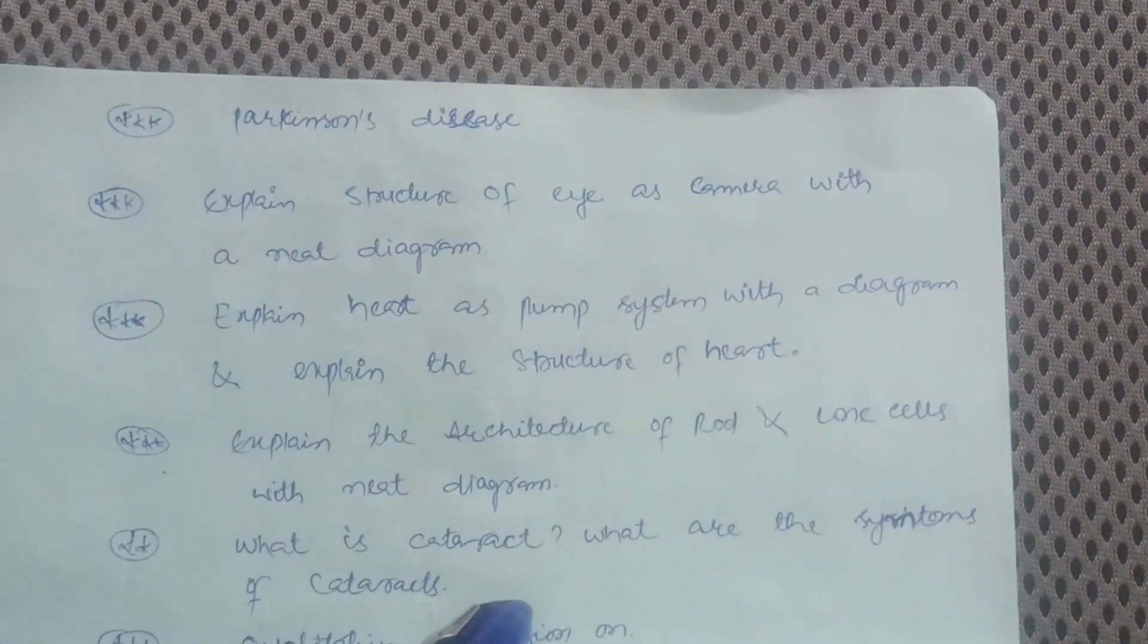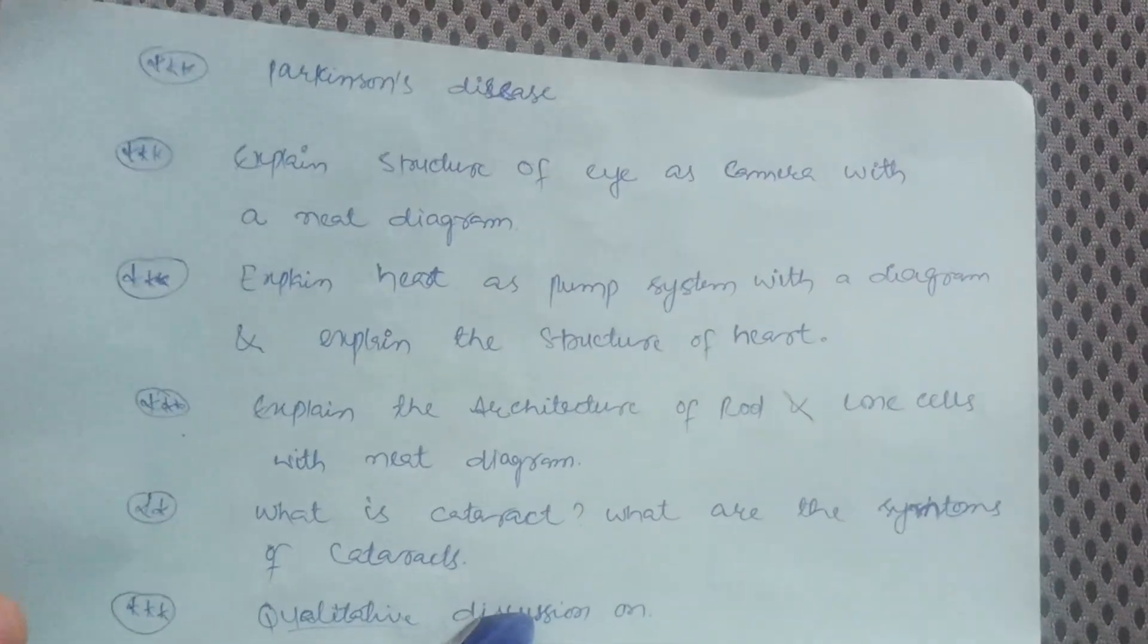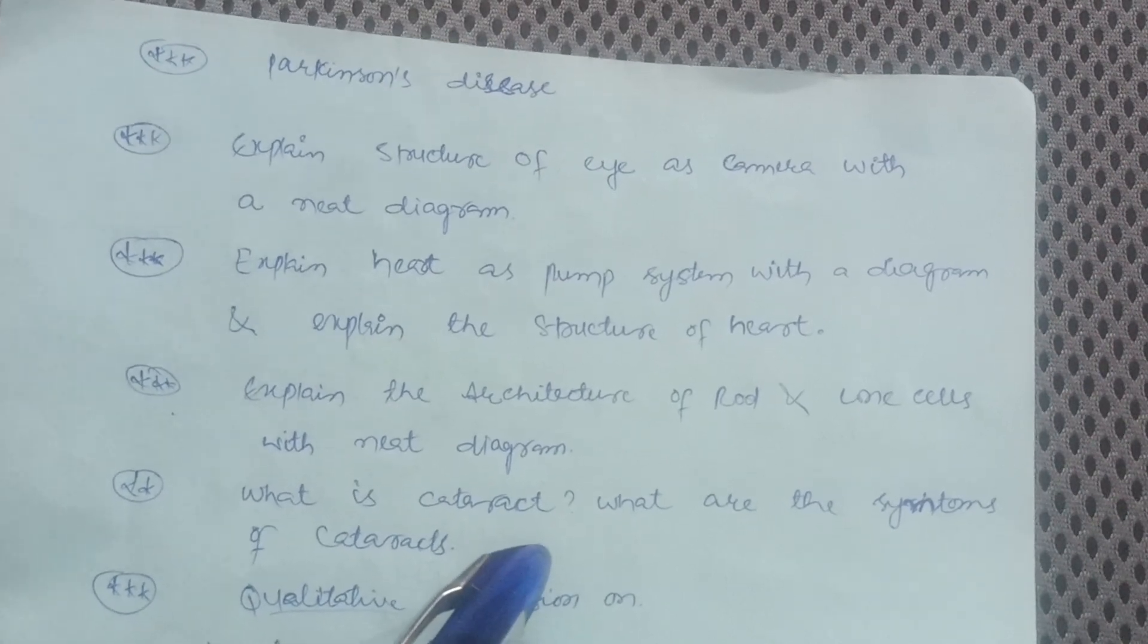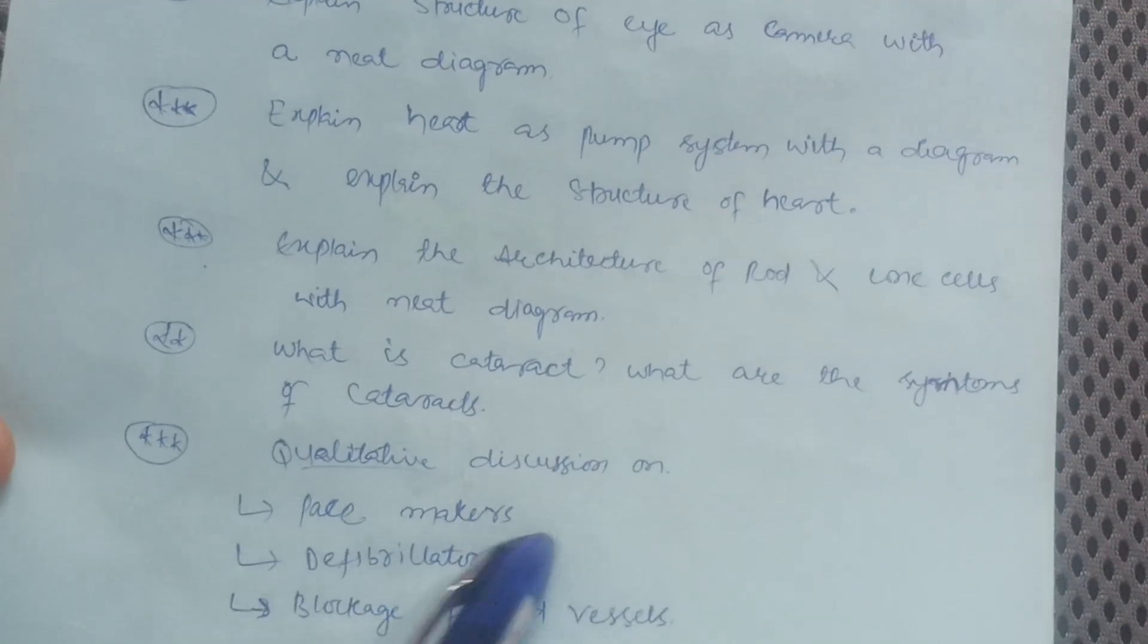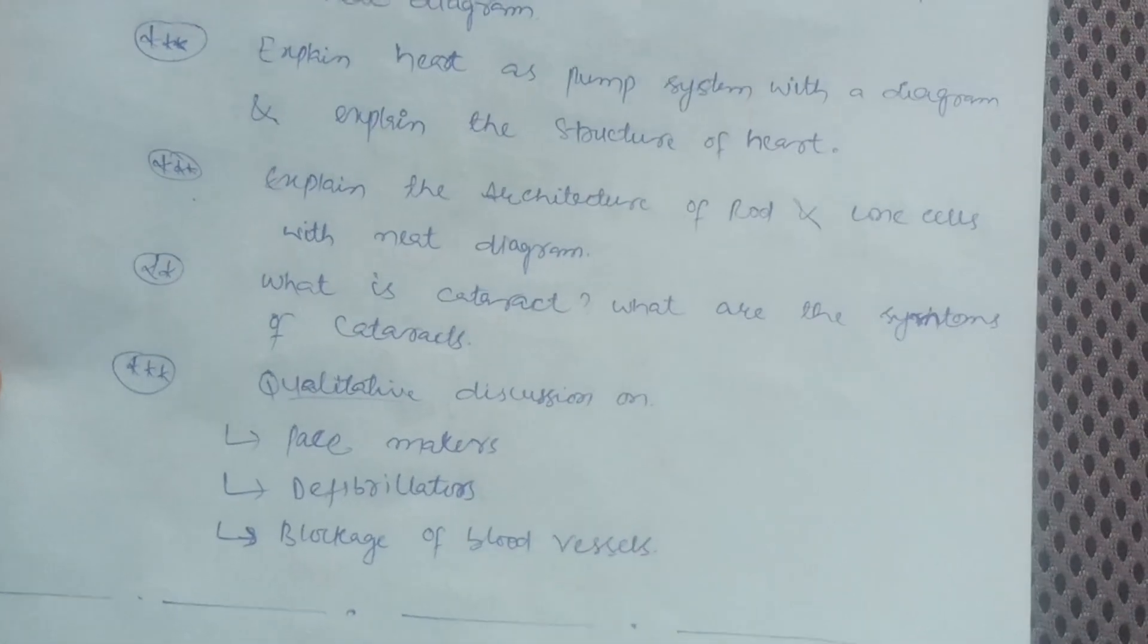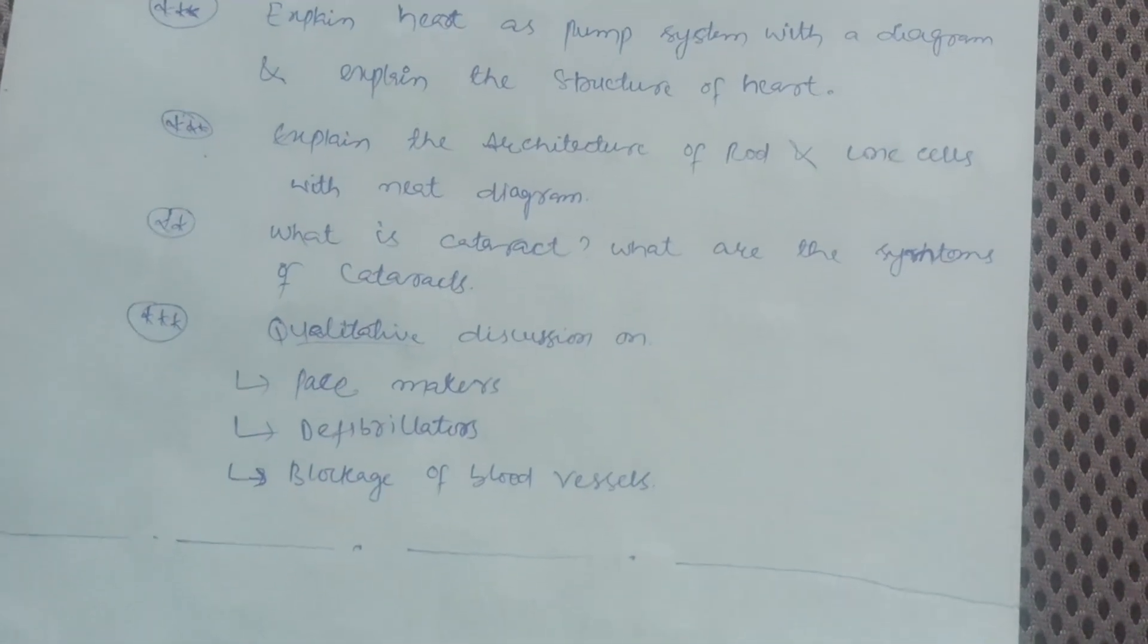It is an easier part. Just try to understand the concepts in your own convenient language so that you can write it in the examination in your own words. No need to memorize at all, as biology is really a burden for engineering students. Qualitative discussion on pacemakers, defibrillators, and blockage of blood vessels. So these are Module 2 in which I discussed the eight important questions.